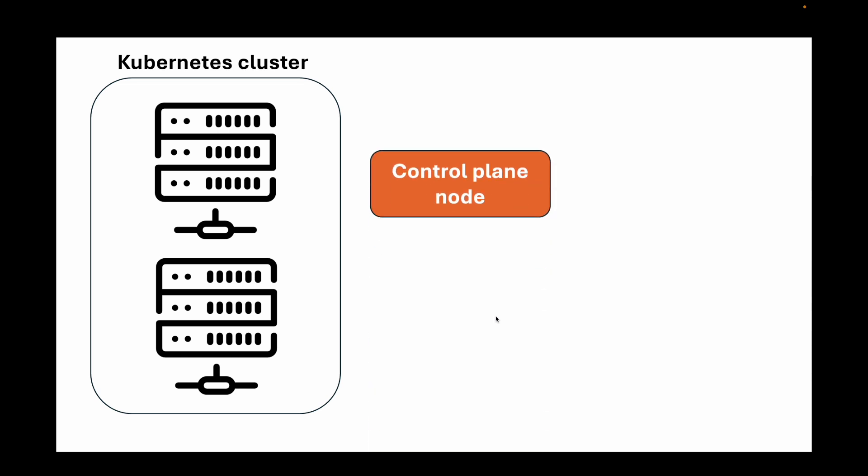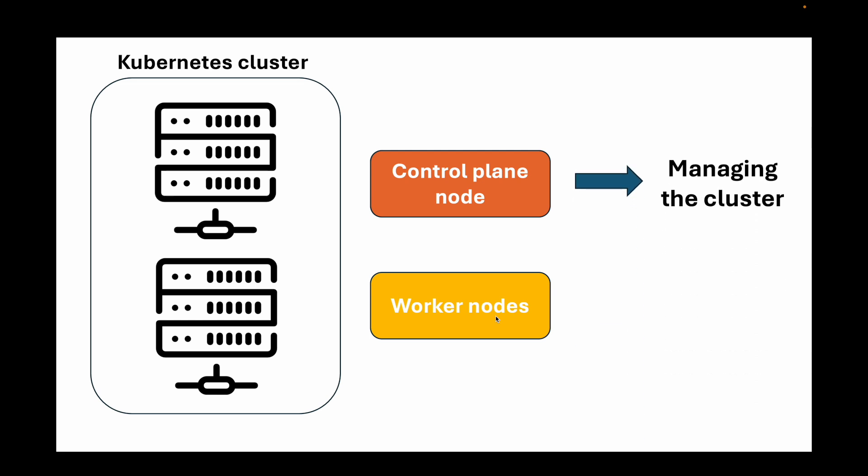When we talk about Kubernetes architecture, we can divide it into two main sections. A Kubernetes cluster has two main components: the control plane and the worker nodes. Generally, you'll have one control plane node, which is like your manager node, and multiple worker nodes where you run your workload. The control plane is mainly responsible for managing the cluster itself, and the worker nodes are where your containers and applications will be running.